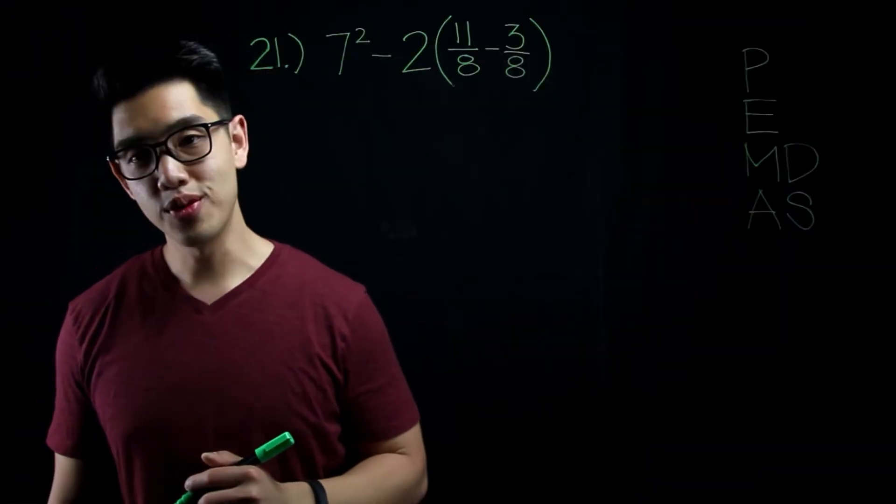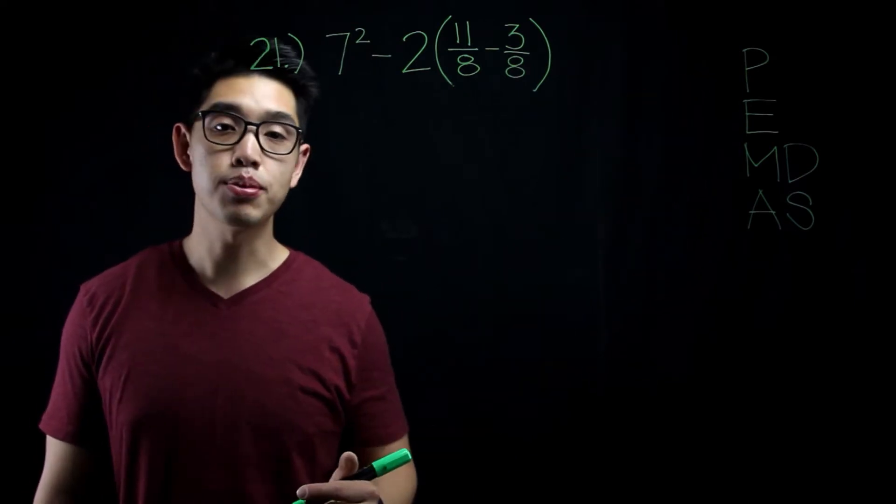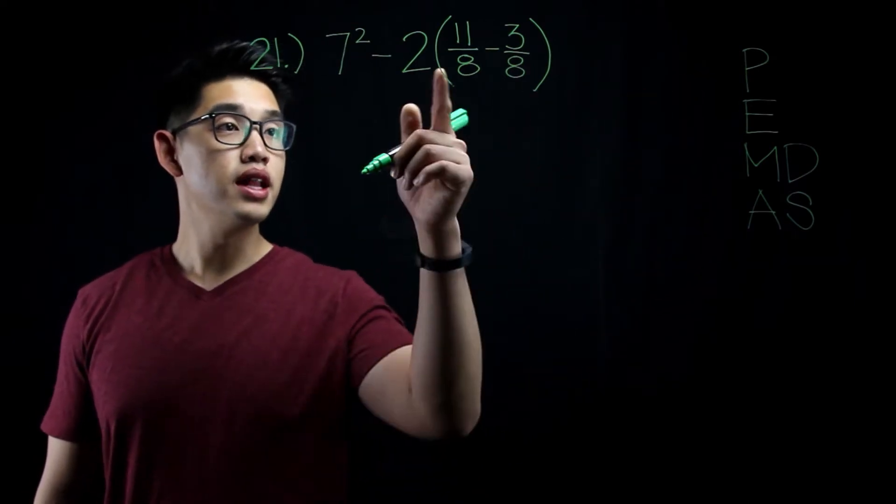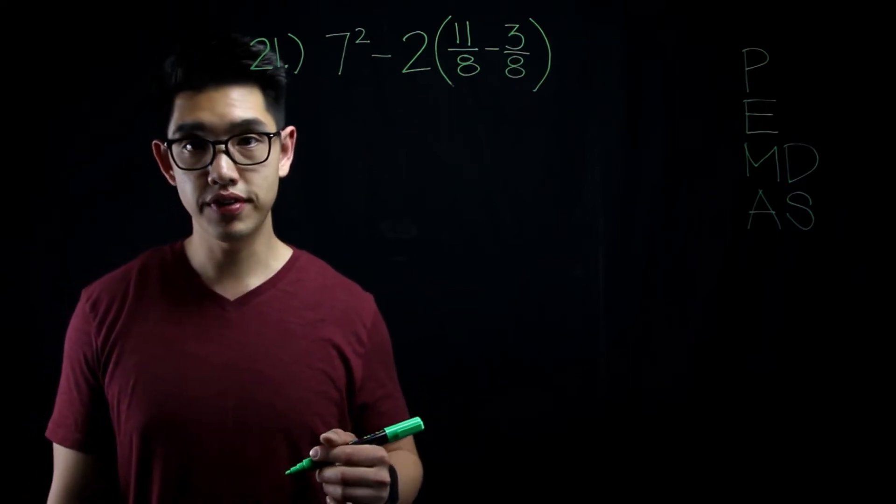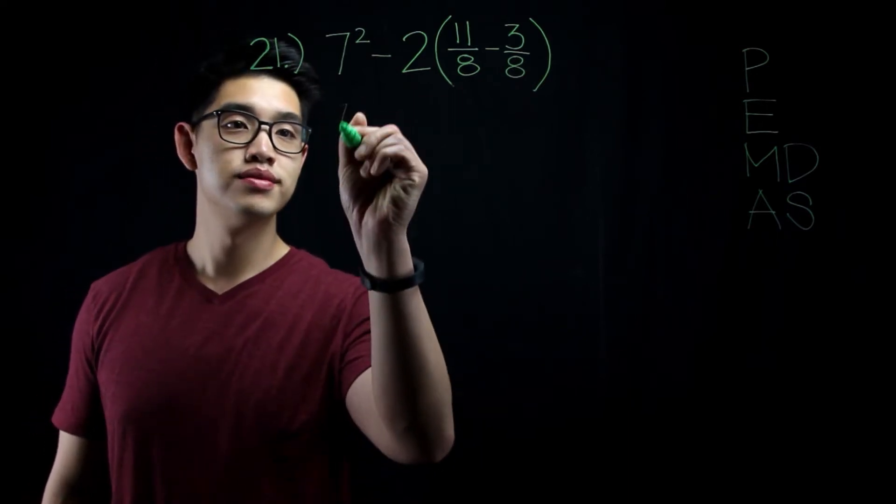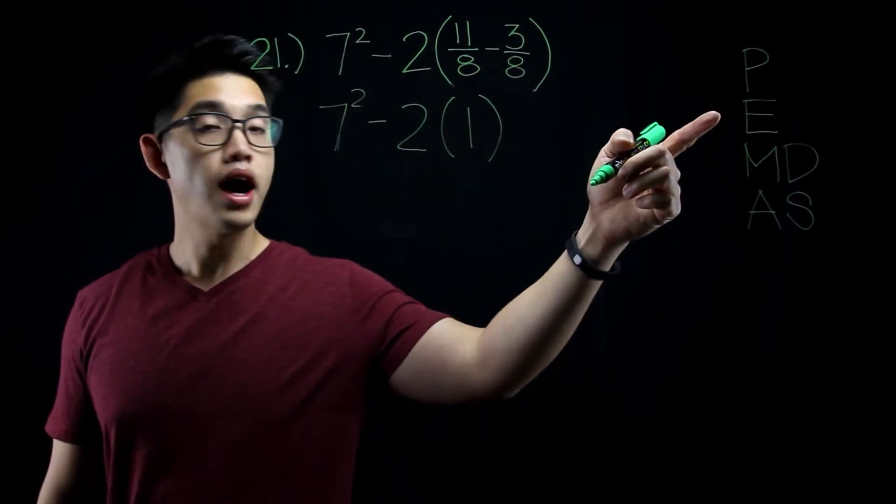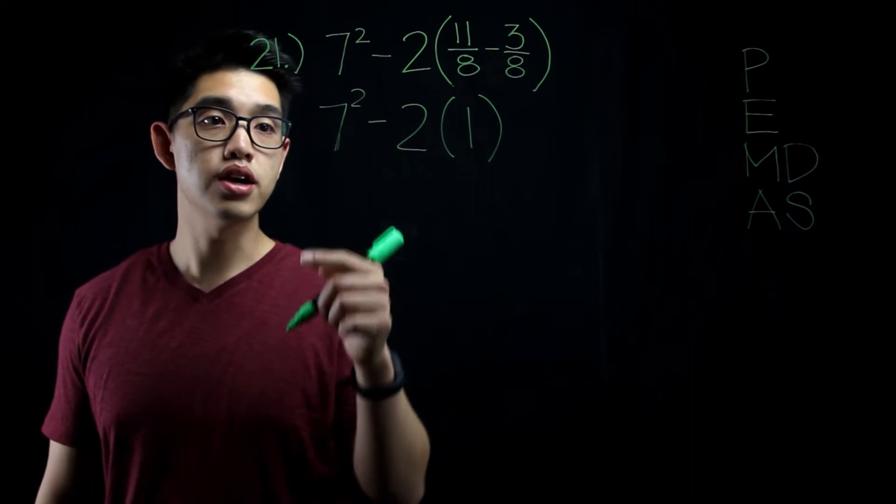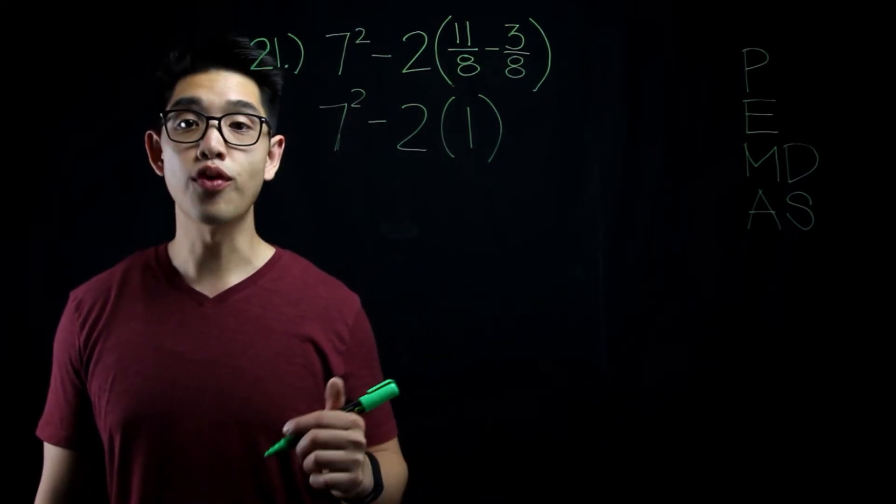Number 21 is another order of operations question. If I take a look at this list right here, I need to solve everything in the parentheses, which is right here. 11 eighths minus 3 eighths equals 8 over 8, which then can be simplified to 1. The next thing on the list, I need to solve exponents, which is right here. 7 squared is the same thing as 7 times 7, which is 49.